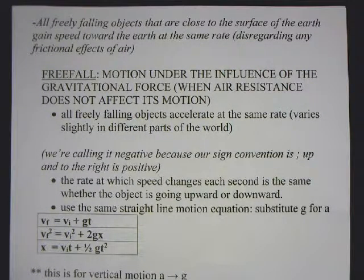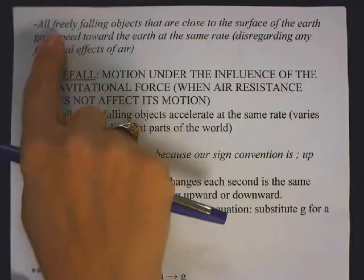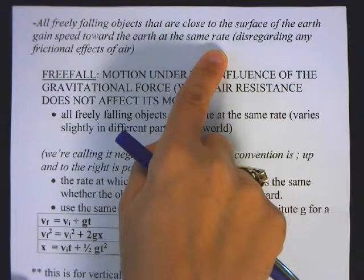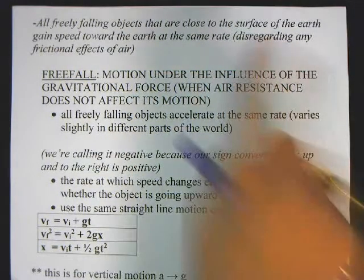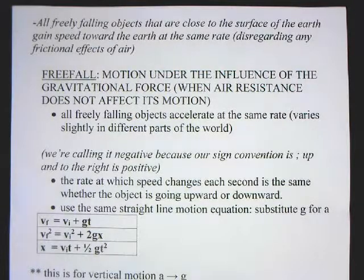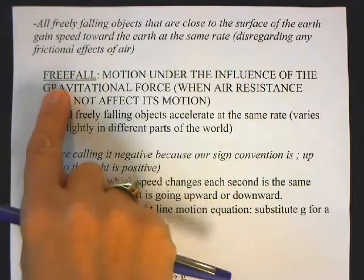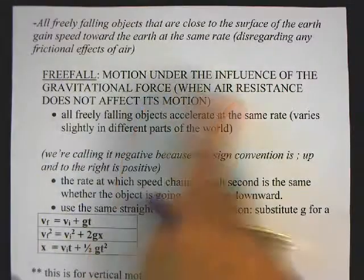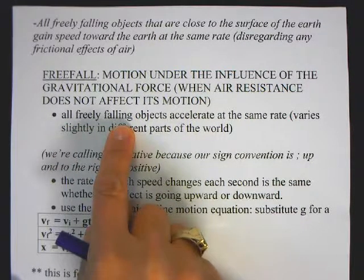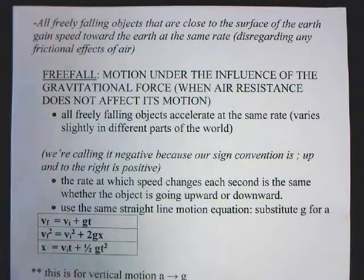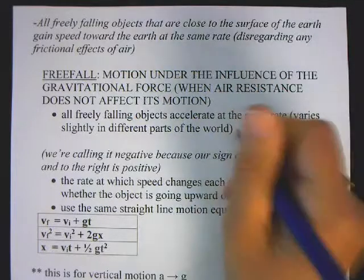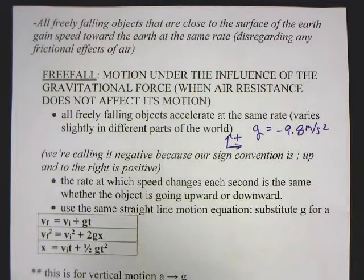We watched the video on the moon, and even though the earth has an atmosphere, we're not going to take air resistance into consideration. All freely falling objects close to the surface of the earth gain speed toward the earth at the same rate. That rate is the acceleration due to gravity. We call these problems free fall — motion under the influence of the gravitational force, with no air resistance. All freely falling objects accelerate at the same rate: negative 9.8 meters per second squared, using our Cartesian sign convention with up and to the right as positive.